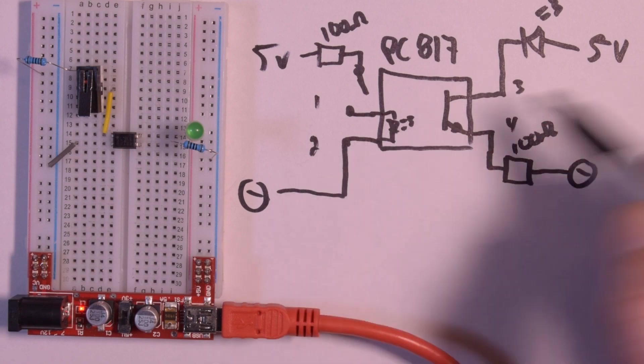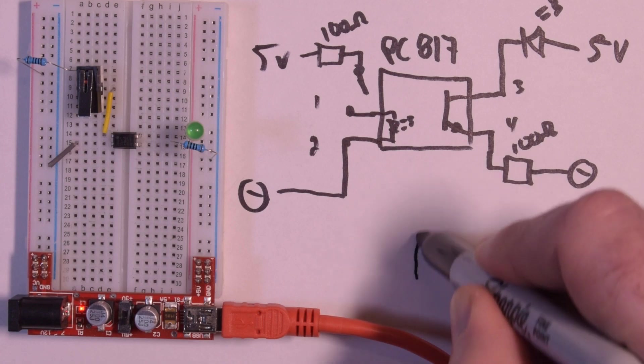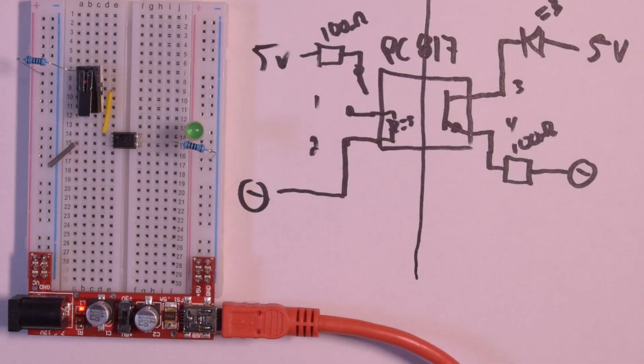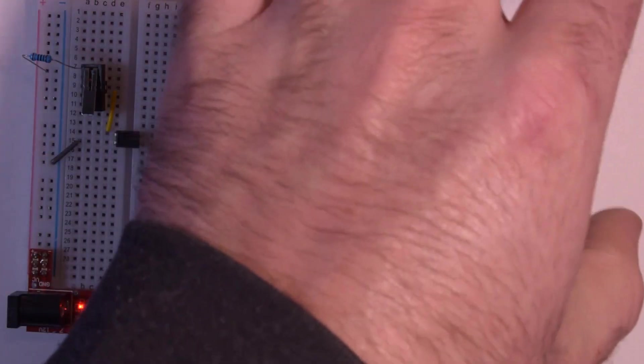We have a transistor. This transistor is actually activated by this LED. There's no physical connection between this side and this side, so there is no way for voltage to come from this end and go into this end.